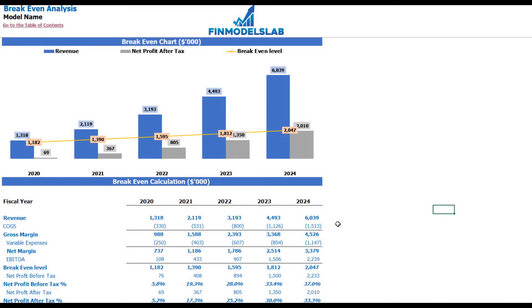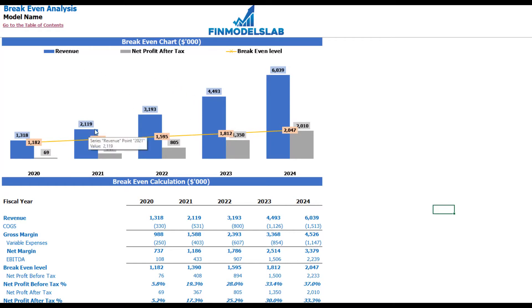On the breakeven tab, you can find the calculation of the revenue breakeven level and a breakeven chart. In this particular example, the revenue breakeven level is less than the actual revenue calculation, which means the company is profitable.